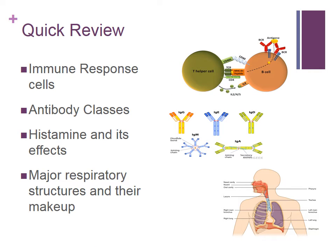In order to understand anaphylaxis, we need to recall immune response cells such as B cells and T cells. Also recall the different classes of antibodies and their structures, as well as their ability to signal for the release of inflammatory agents such as histamine. If need be, review the major anatomical structures of the respiratory system to have a better understanding of anaphylaxis.